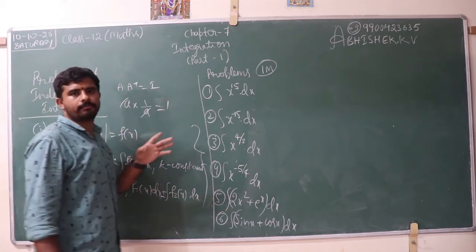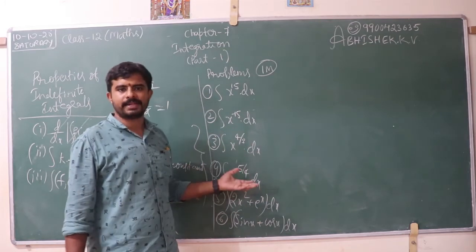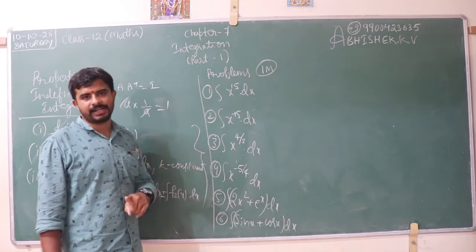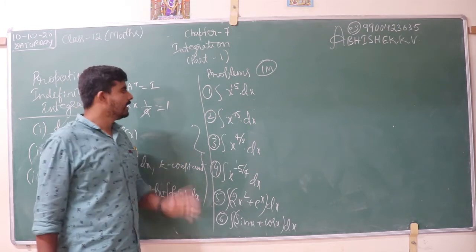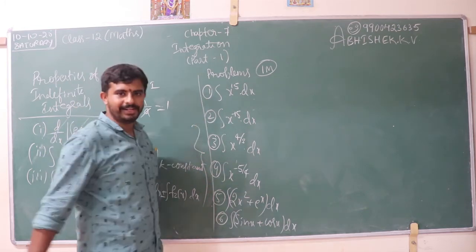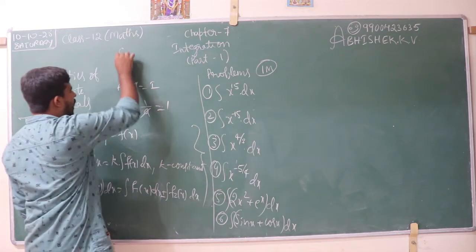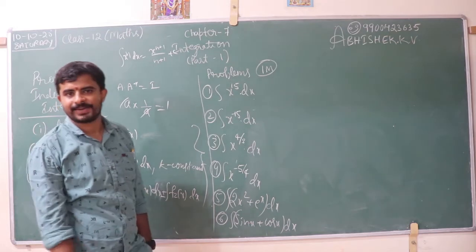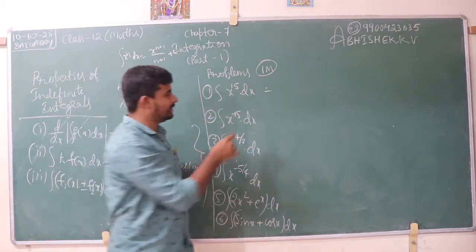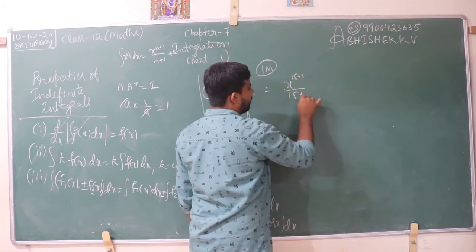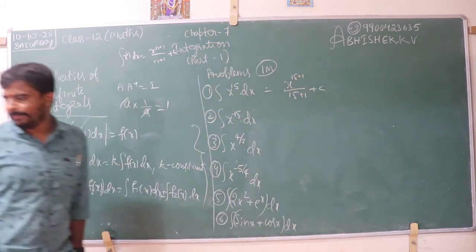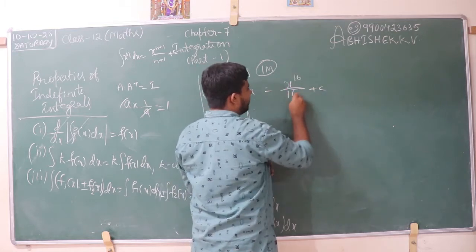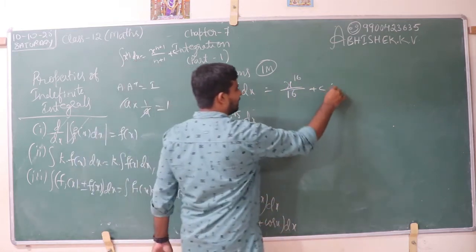Let us move on to one-mark problems. These types of problems the examiner likes to ask in the annual examination. Integral of x to the power 15 dx: we know integral of x to the power n dx equals x to the power n plus 1 divided by n plus 1 plus c. Here n equals 15, so the result is x to the power 16 divided by 16 plus c. For x to the power minus 15: x to the power minus 15 plus 1 divided by minus 15 plus 1 plus c equals x to the power minus 14 divided by minus 14 plus c.